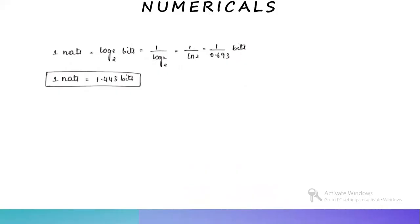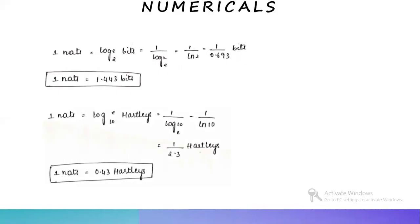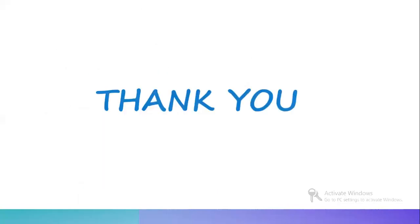For the relationship between Nats and Hartley: 1 Nat equals log_e base 10 Hartley equals 1/log_10 base e equals 1/ln(10) equals 1/2.3, so 1 Nat equals 0.3 Hartley. Remember these relationships and values — in numericals they may ask you to convert bits to Nats, Nats to bits, Hartley to bits, or bits to Hartley. We will continue with other topics of Module 1 in the next lecture video. Thank you.